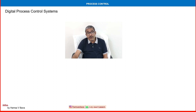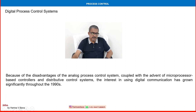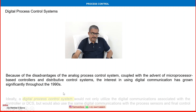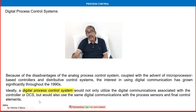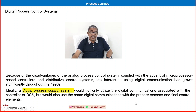Based on the limitations and disadvantages of analog systems, the world of instrumentation moved toward digital process control systems. Because of these disadvantages, coupled with the advent of microprocessor-based controllers and DCS, interest in using digital communication has grown significantly throughout the 1990s. Ideally, a digital process control would utilize digital communication not only with the controller or DCS, but also with the process sensors and final control elements.